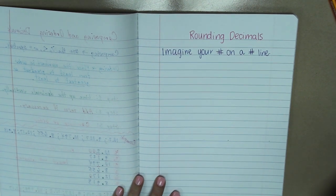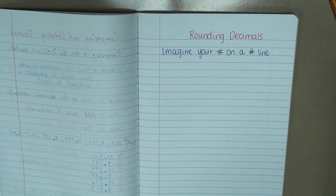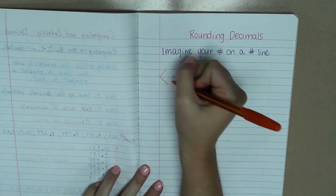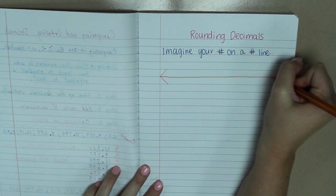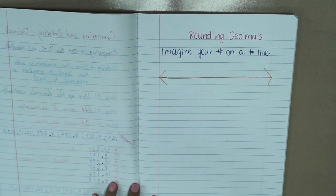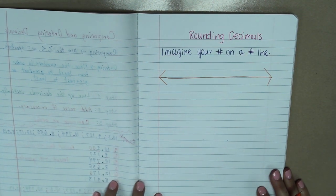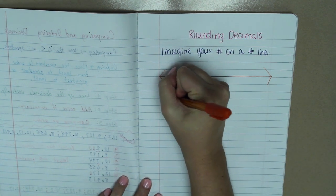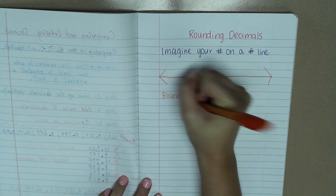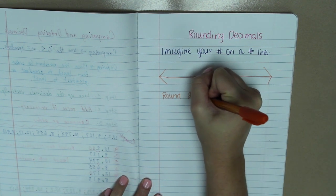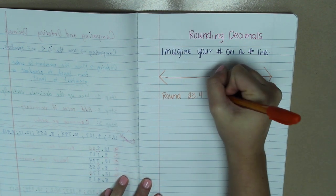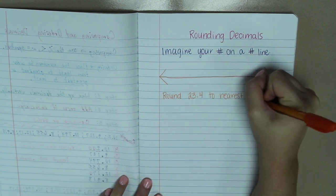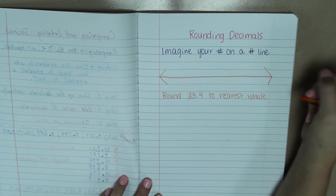Okay, so you might want to get out a ruler or a straight edge of some kind to draw your number lines. So I'm going to start with a number line. Don't make it too big. Okay, so for our first example, we are going to round the number 23 and 4 tenths to the nearest whole number.